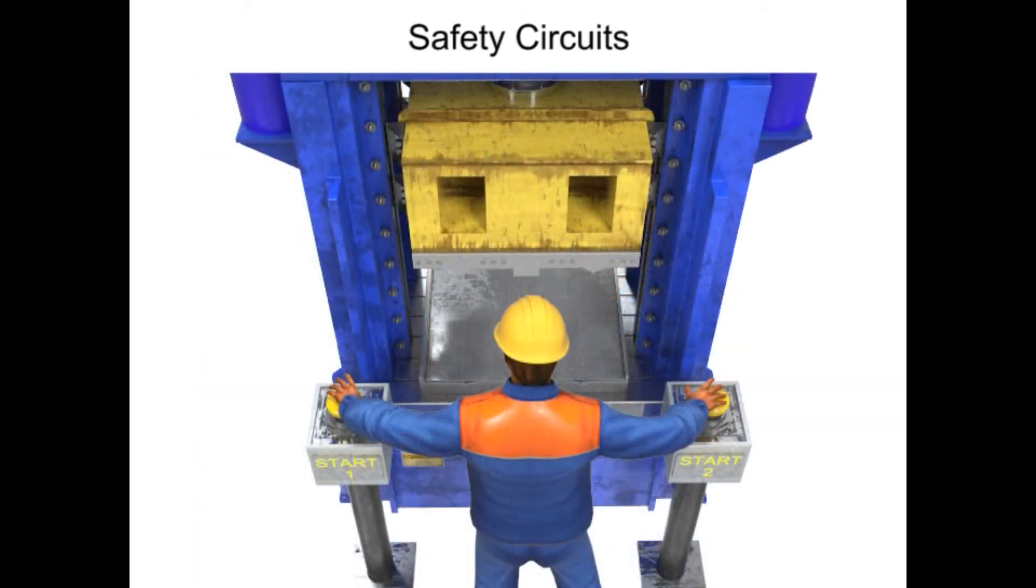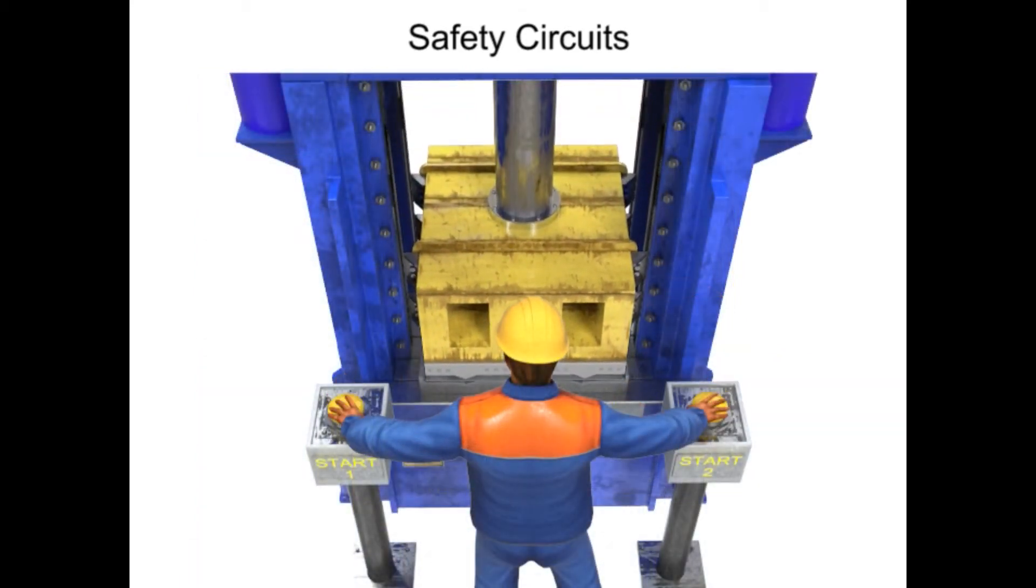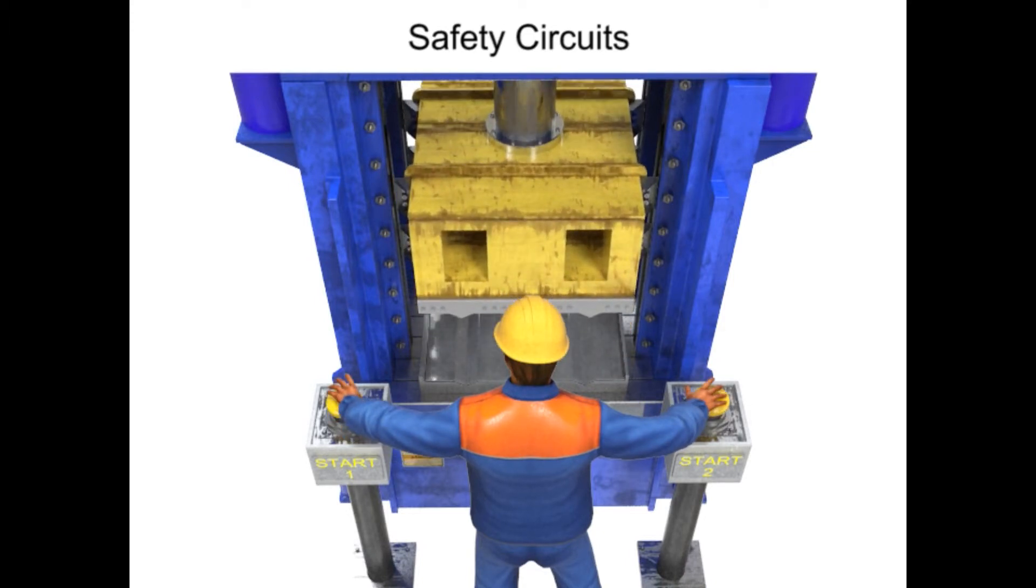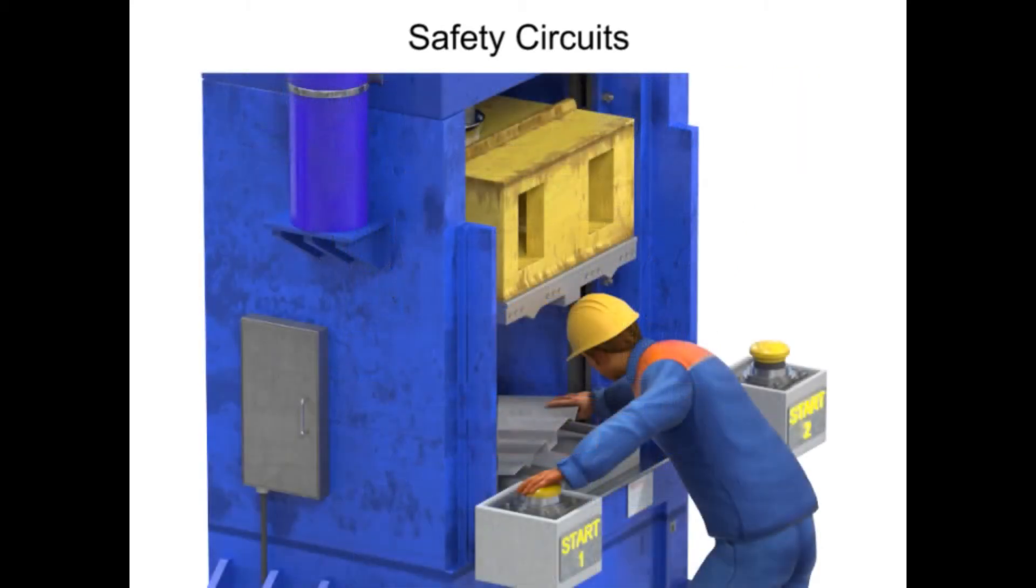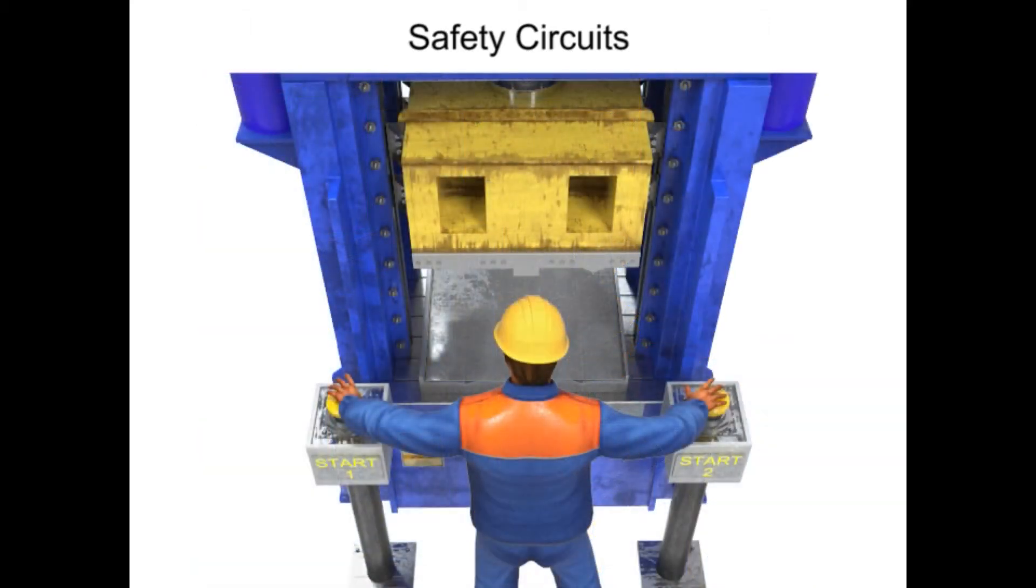Two-hand controls are an actuation device that requires the concurrent use of both hands of the operator to start a cycle. The purpose is to prevent the operator from having any part of his or her body in the work envelope of the machine during its operating cycle.